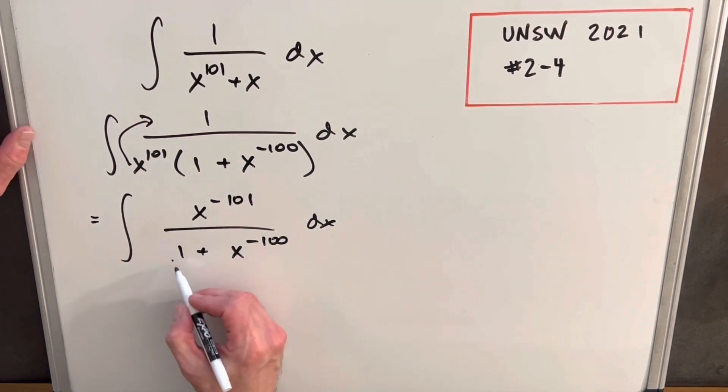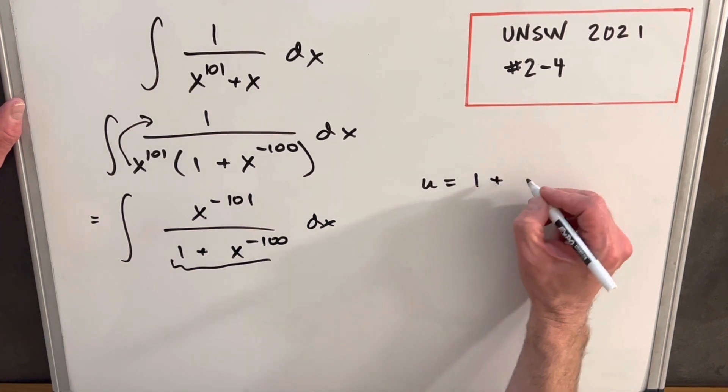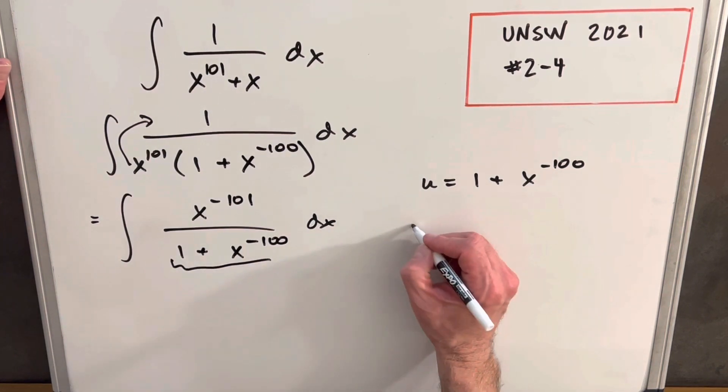From here, what I'd like to try is let's just take the denominator to be our u. That way when we differentiate the one, that's just going to be zero. So let's see what happens when we do this. We'll have u equals one plus x to the minus 100. Then we'll differentiate this to get our du.